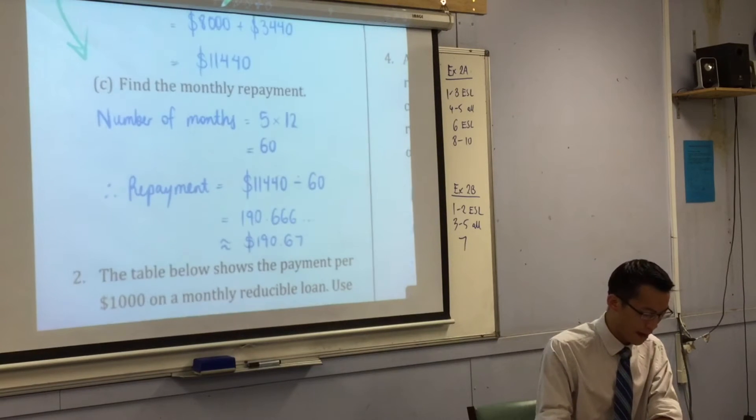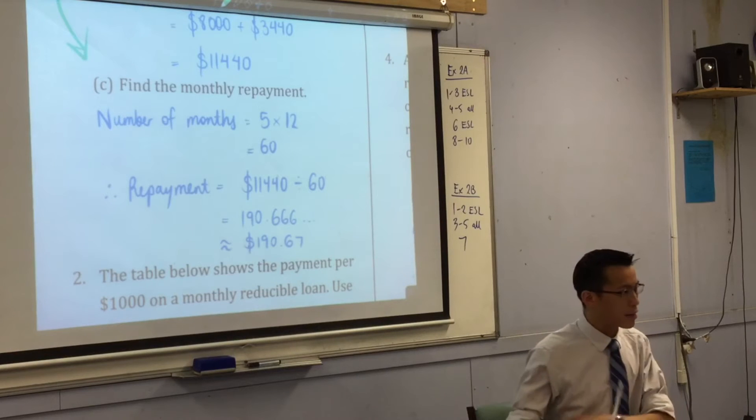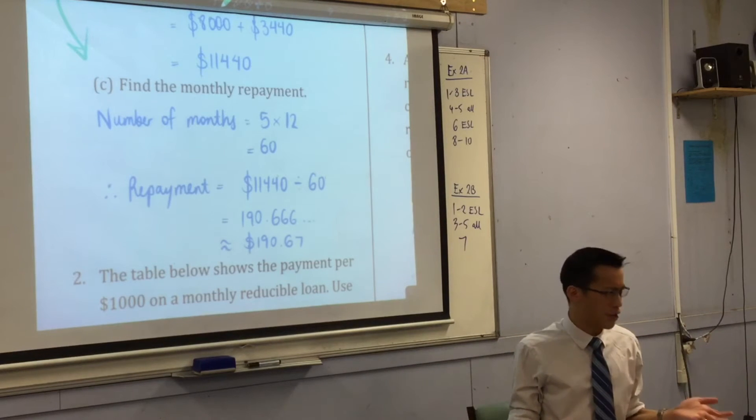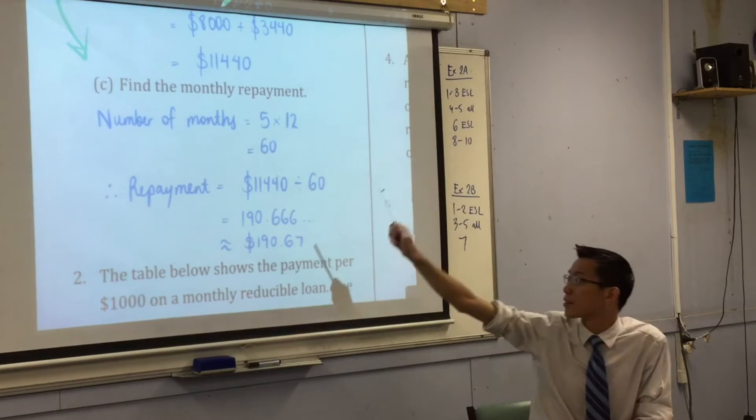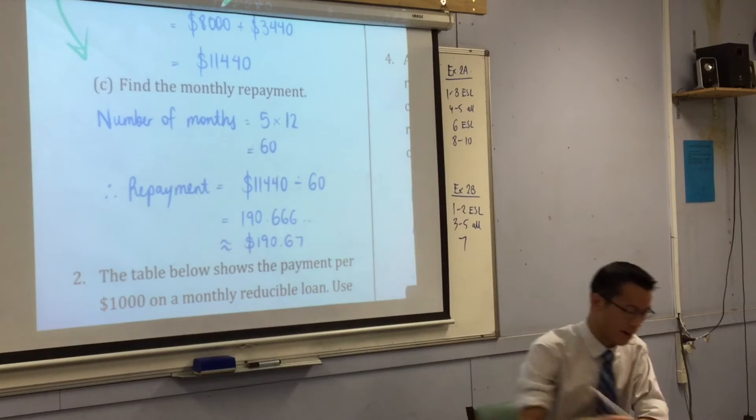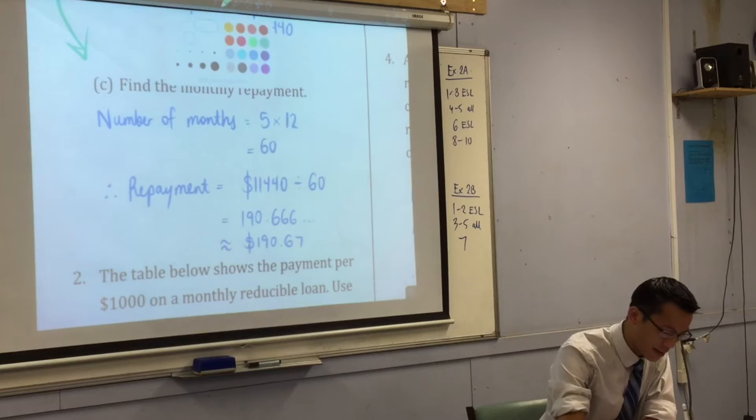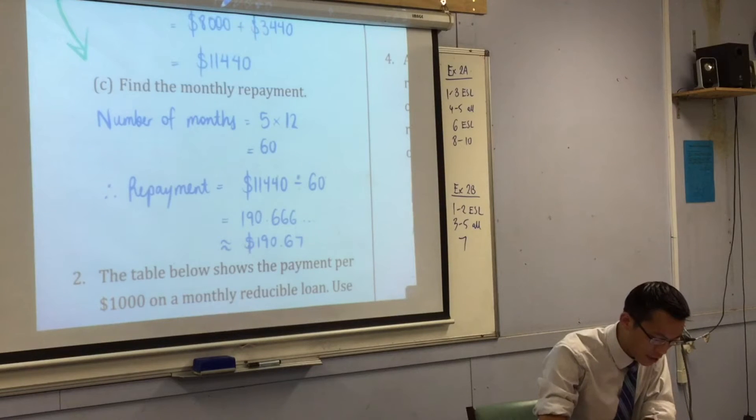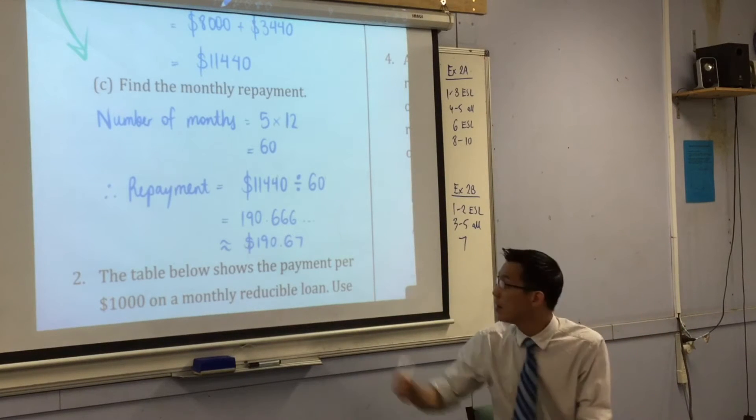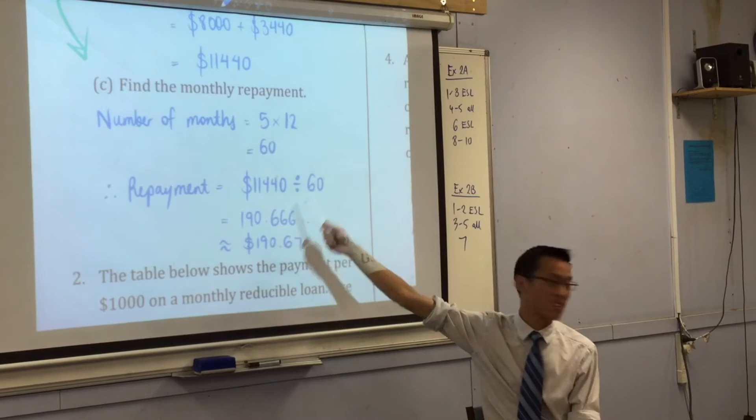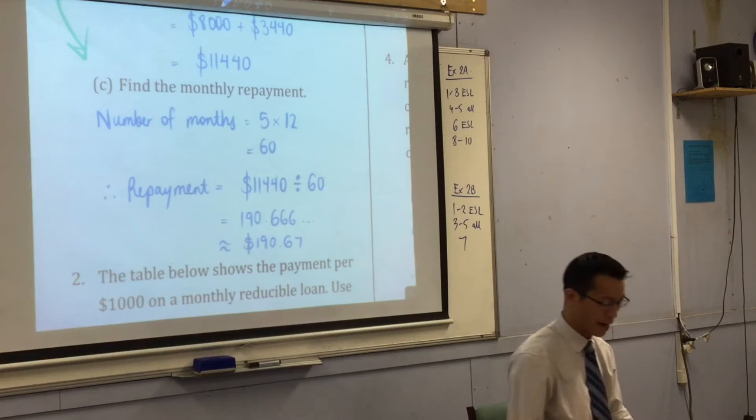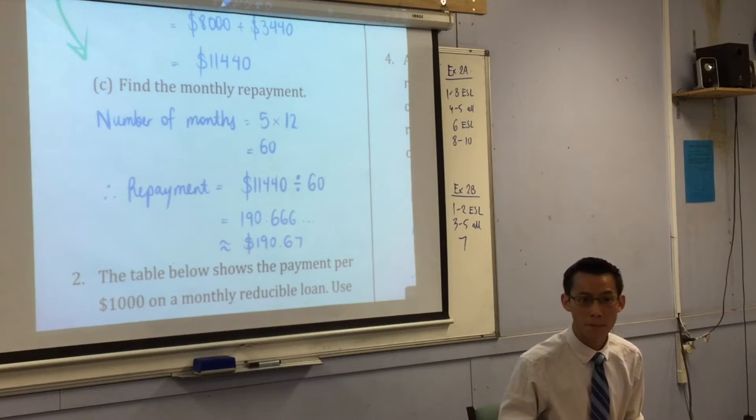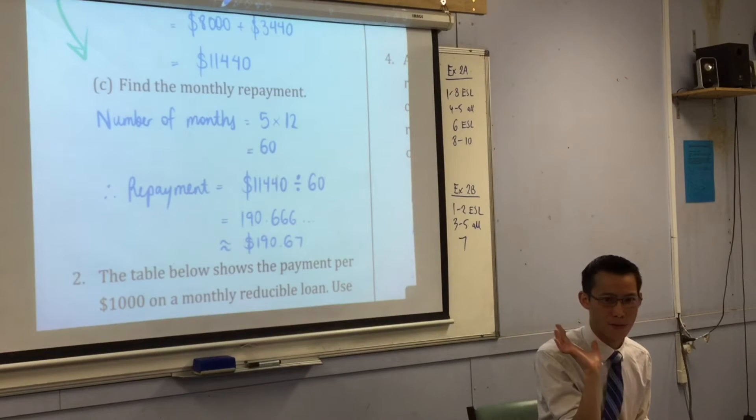So you've got your $11,440, and hopefully you saw the progression from part A to B and B to C. To find the monthly repayment, you had to work out, well, how many months am I going to have to take to repay this thing? There's five years, so you can see how I got 60 months. If you want to work out how much has to be paid every single one of those 60 months, it's just a division. So $190.67 is what happens after you round. Any questions before I move on to that?